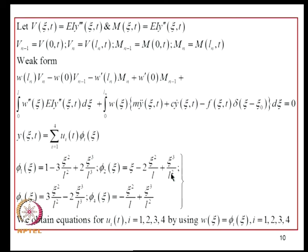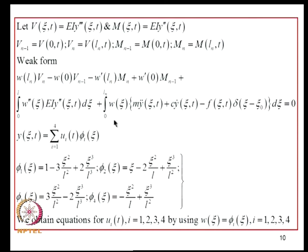We denote by V the shear force and by EIY'' and EIY''' the bending moment and shear-related terms. V_{N-1} is the shear force at the left end, V_N at the right end; M_{N-1} and M_N are the bending moments at XI = 0 and L_N. The weak form using these notations is represented by this equation.